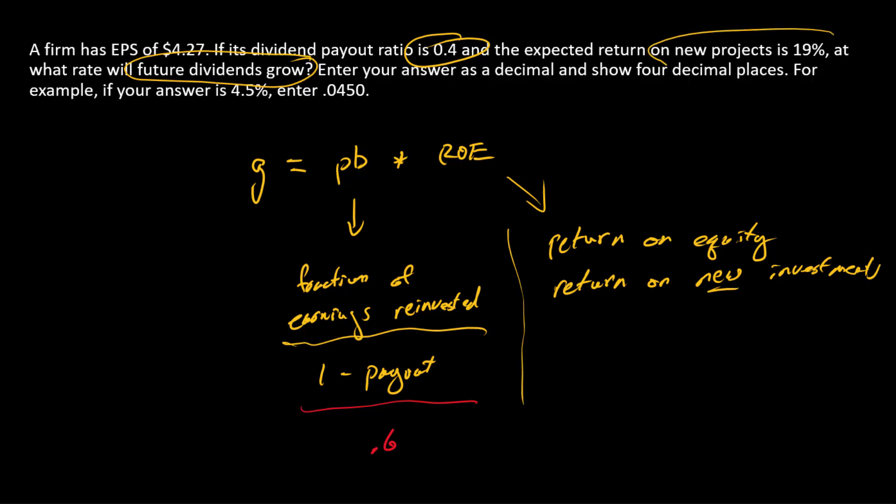And so that's this number right here. And so in this problem we have 0.19. And so what is G?